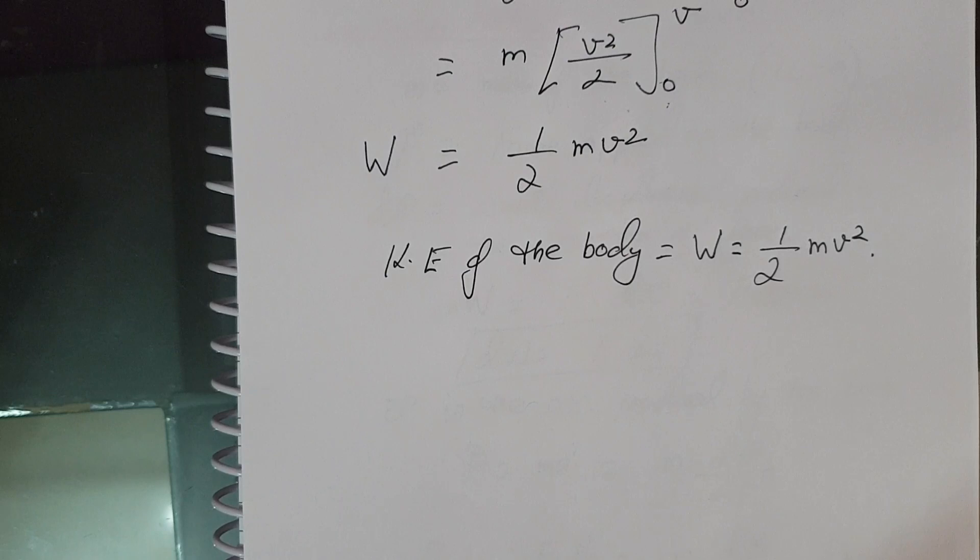Thus the kinetic energy of the body is half the product of mass of the body and square of the velocity of the body.